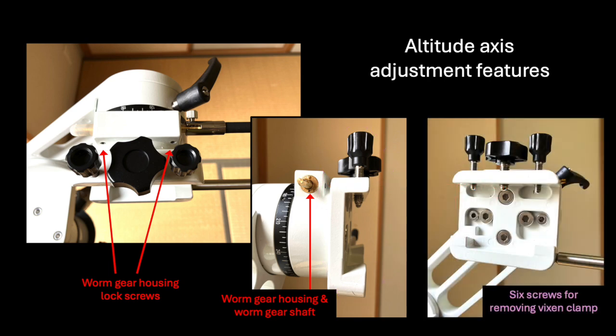It may be necessary, however, in this case, to remove the Vixen clamp in order to get access to the worm gear locking screws since they are hidden behind the clamp. But that can be done by simply unscrewing the six Allen screws that you see on the clamp.